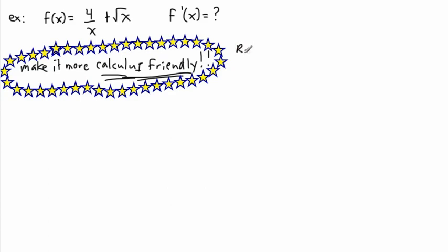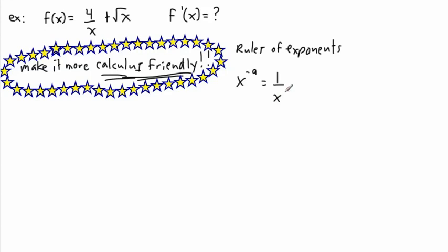It helps to remember the rules of exponents. Just in case you forgot them, let's go over just a couple of the really important ones. One is that if we have a negative exponent — let's say x to the power of negative a — that's the same thing as saying 1 over x to the a. In other words, if you see something with a negative exponent, it's the same as saying 1 over that thing with a positive exponent.